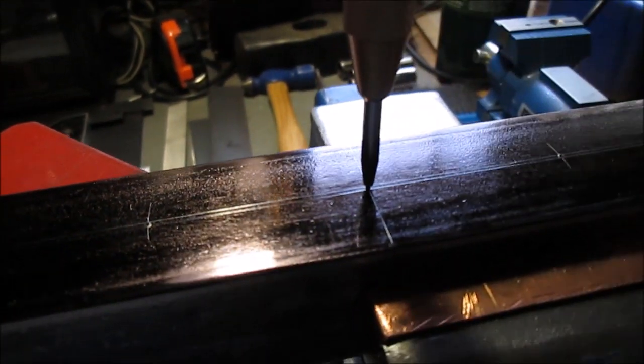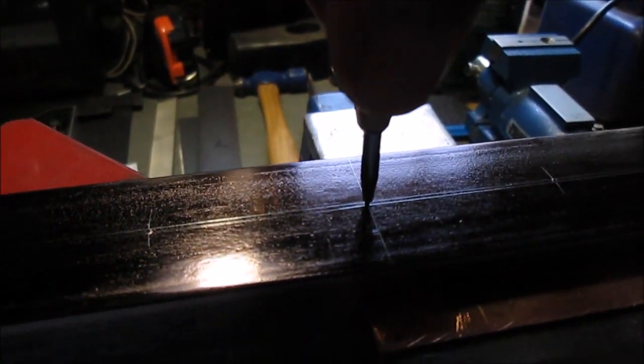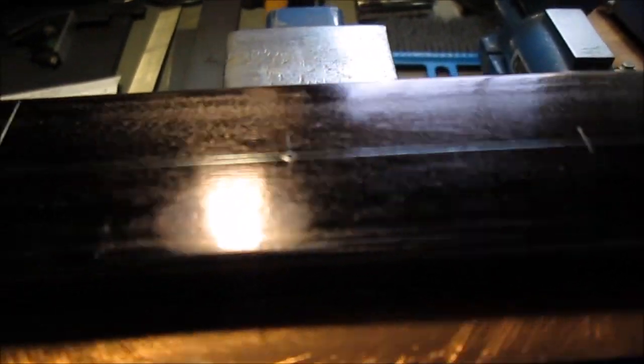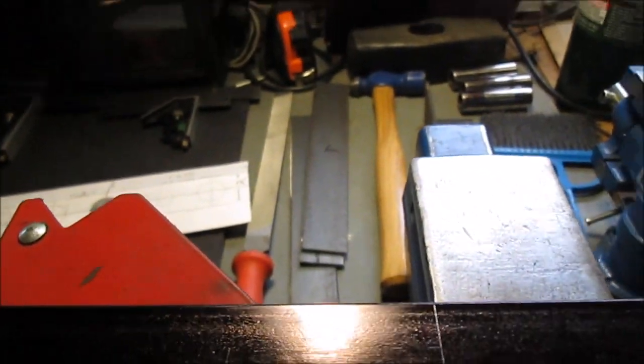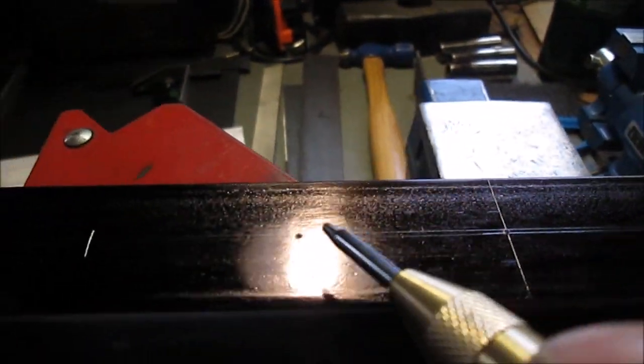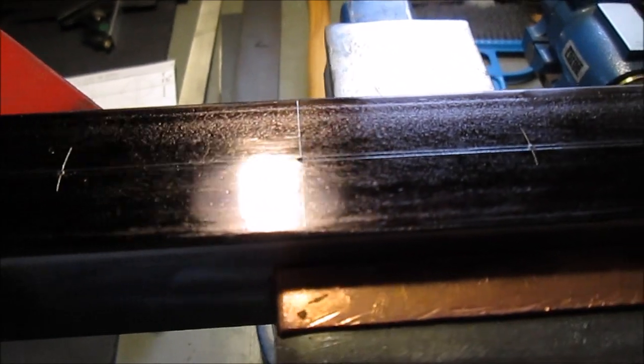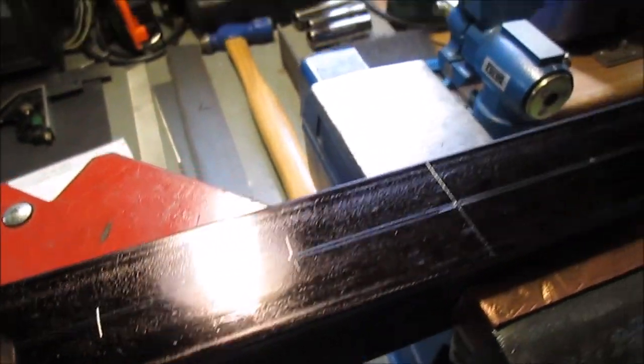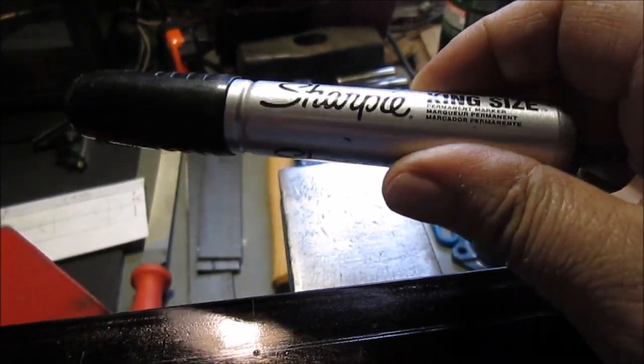Then take the center punch, which these are cheap, they can act up. The center punch, what happens when you push down, it fires like that, and then we'll punch the hole bigger before we drill it. So that's what we did, we got our holes, five holes: one, two, three, four, five. There we go, I think we're doing it right.